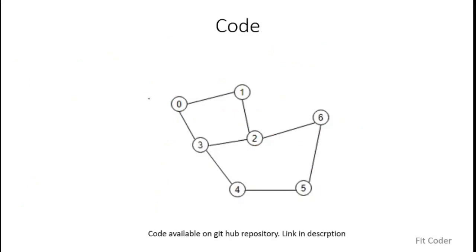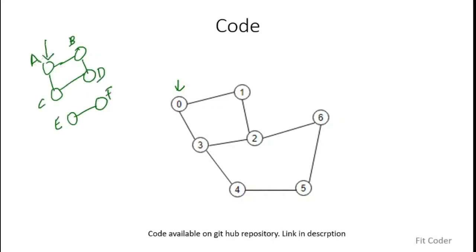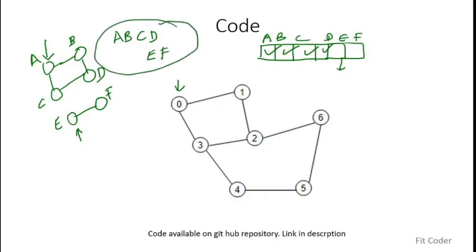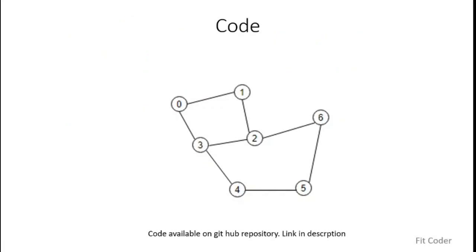One important thing to note: when you start traversal from a particular node, you visit all nodes only if the graph is connected. If the graph is disconnected, for example starting from A in a graph where A, B, C, D are one component and E, F are another, you will only traverse A, B, C, D. To handle this, after the queue is empty check the visited array — any unvisited nodes are picked as new start vertices and BFS is run again from there. This way you traverse all components of the graph.